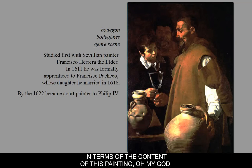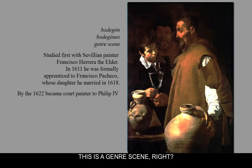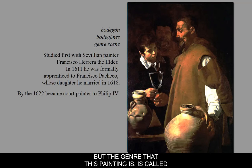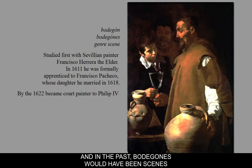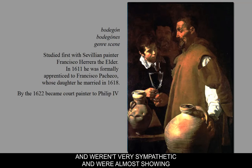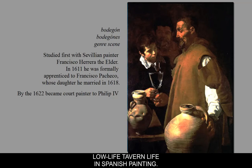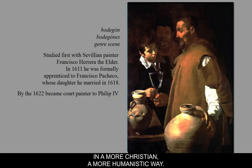In terms of the content of this painting — for a first painting, this is incredible. This is a genre scene, a scene of everyday life. The genre this painting belongs to is called a bodegón, or the plural, bodegones — basically a tavern or kitchen scene. In the past, bodegones were designed to be tongue-in-cheek and not very sympathetic, showing low-life tavern scenes in Spanish painting. But Velázquez uses it in a more Christian, humanistic way.